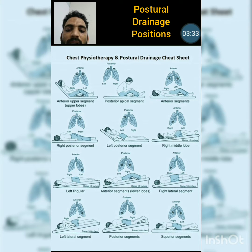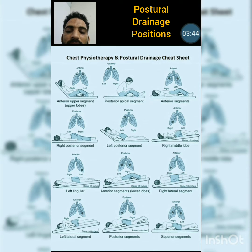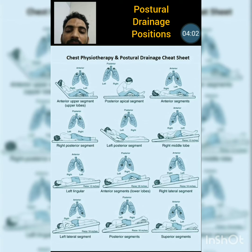The therapist provides percussion just below the left lung. The left lung has only two lobes — the upper and the lower lobe — so the left lingual area corresponds to the lower area of the left lung. The patient is lying supine, tilted slightly towards the right side, with the bed raised 12 inches from the leg side. The therapist provides percussion just below the nipple area and guides the patient through active pulmonary exercises.